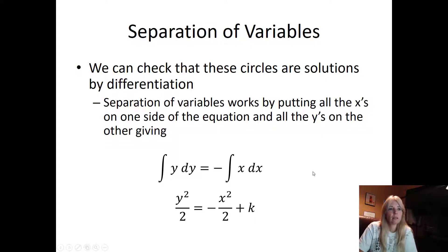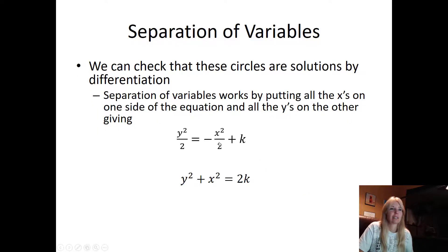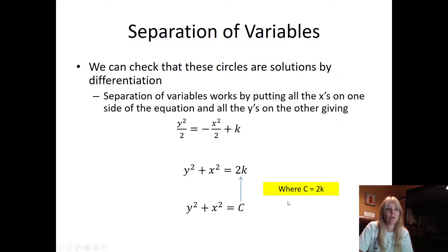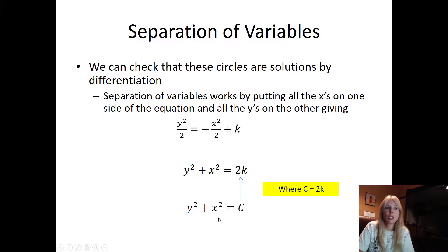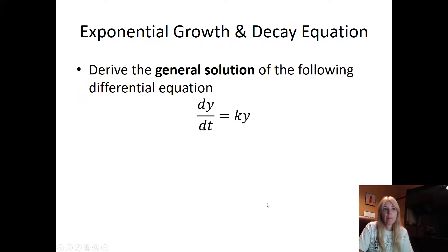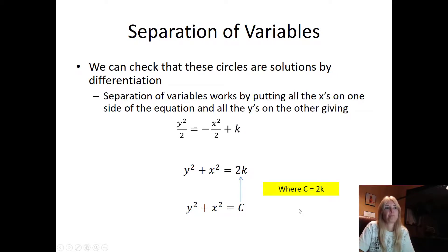If I take this and multiply every single term by two and move the x² to the other side, now this looks exactly like the equation of a circle. This piece right here is just two times whatever that constant is — we can just call it a constant. So with separation of variables, I actually proved that the solution to this differential equation, by separating the variables and integrating both sides, ended up being an actual equation for a circle.